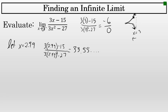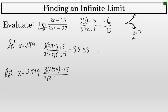But to be sure of that, let's see what the graph is doing as it gets even closer to 3. Let's let x equal 2.999. When x equals 2.999 and you substitute that value for x in the original expression — this is a thousandth away from x equals 3 — the result is 333.55. This implies that as it's getting closer to 3, the value of y is getting bigger and bigger. As x gets closer to 3, the associated value of f of x is getting bigger and bigger.